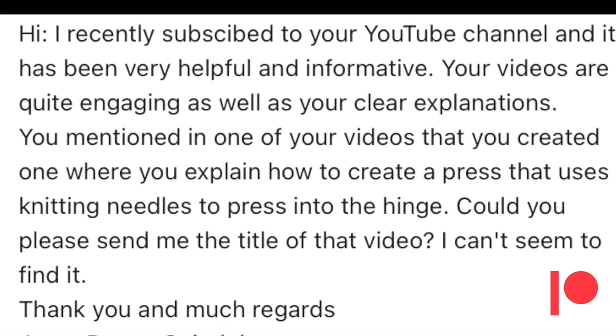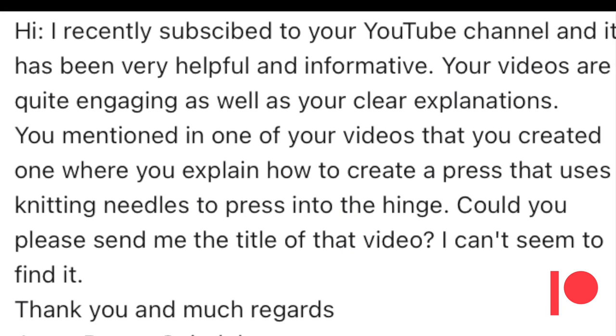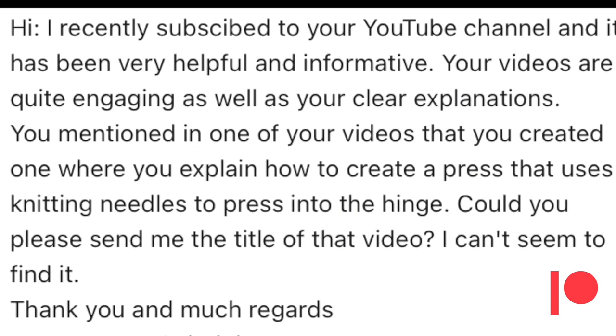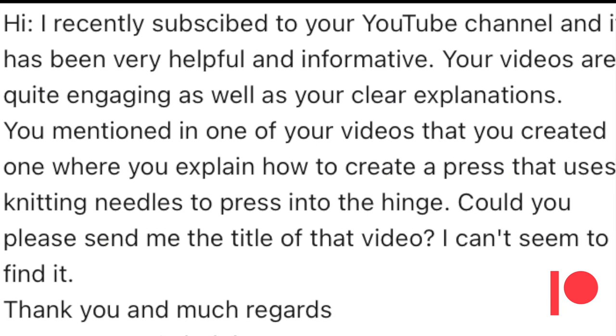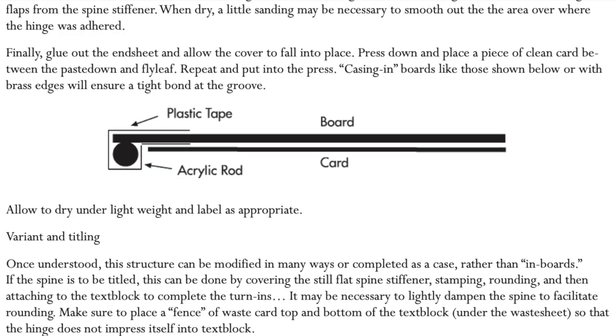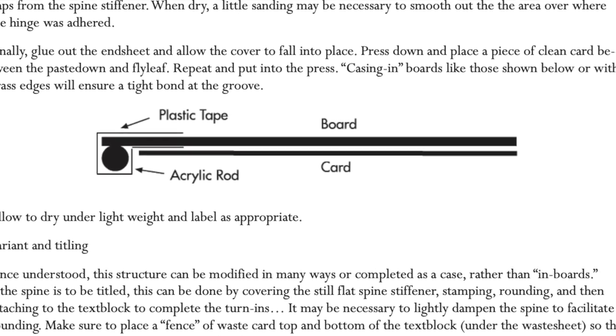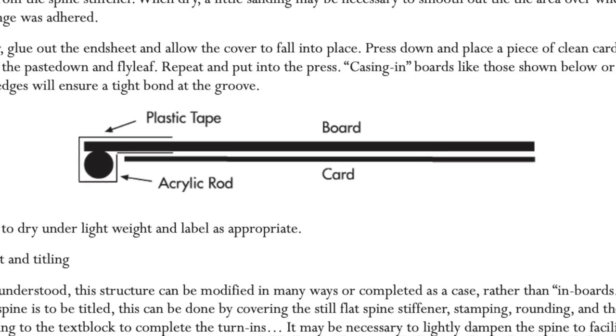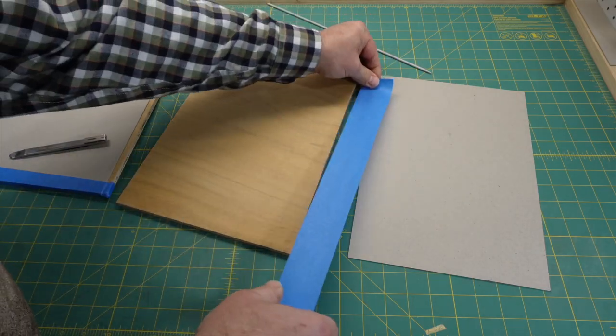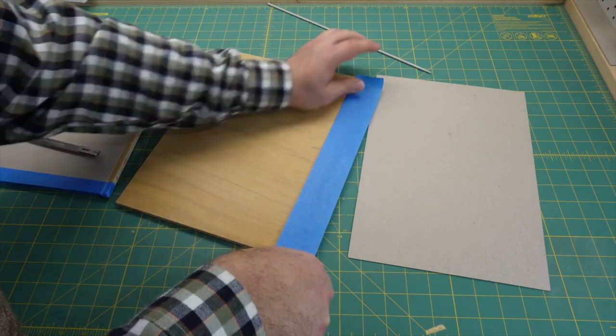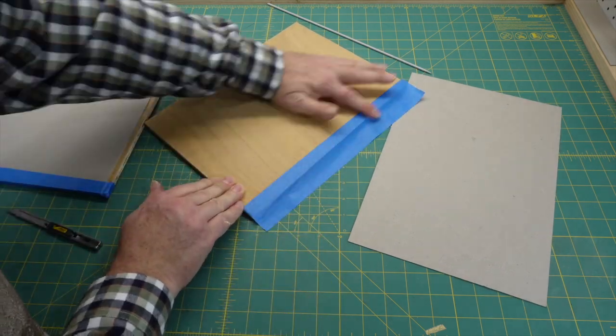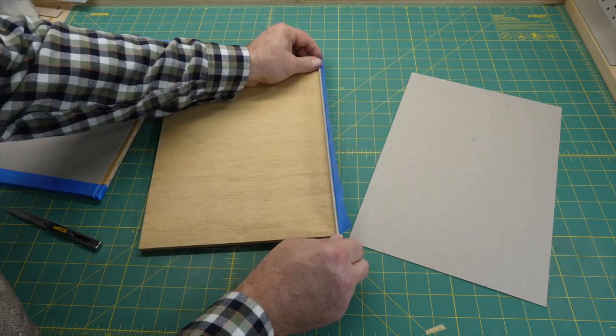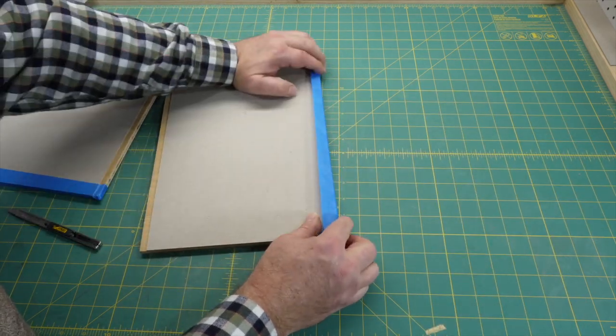Patreon Jorge asks about the boards with the knitting needles on the edges. I don't remember if I demonstrated making these in a video, but they're very straightforward. Here's the diagram of them from Peter Verheyen's article, and there's a link in the description. I just take the ends off the knitting needles and tape them to the edge of the board, and then add a thin piece of card, which can be used to adjust how deep the rods push into the hinge, and it helps hold the knitting needles in place.